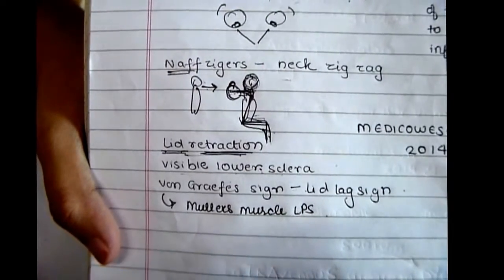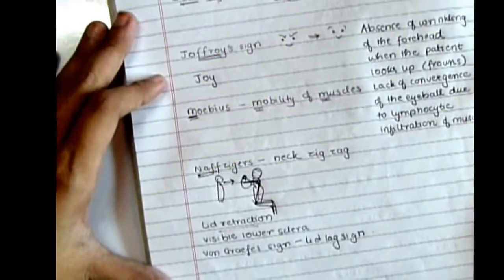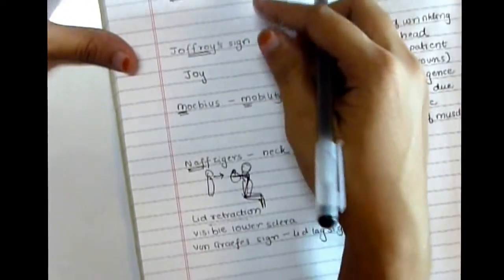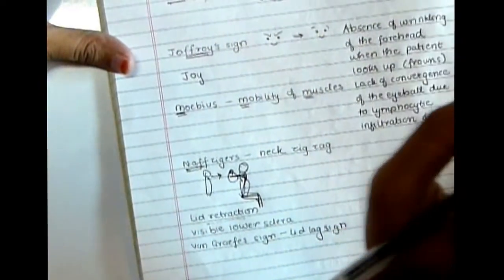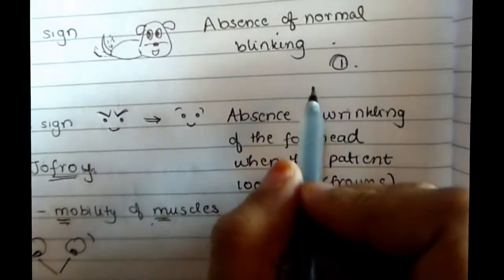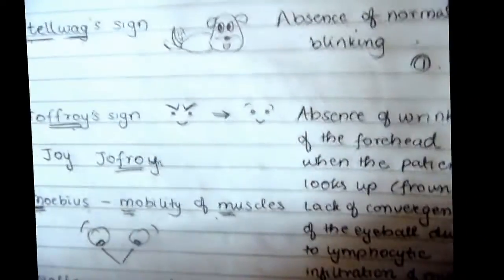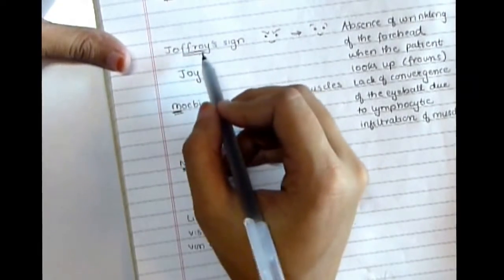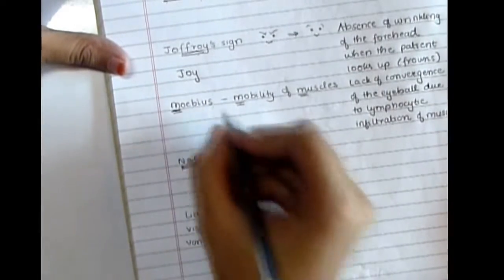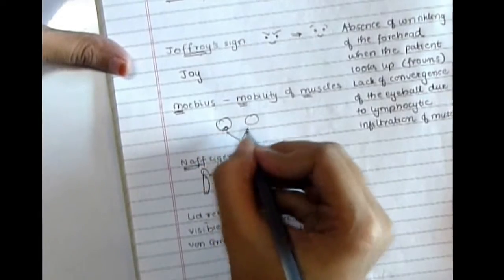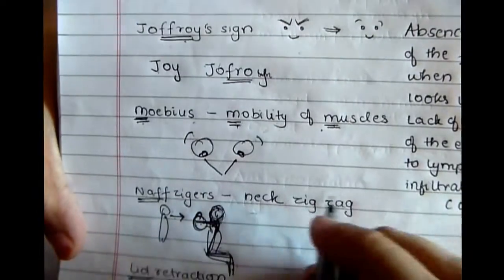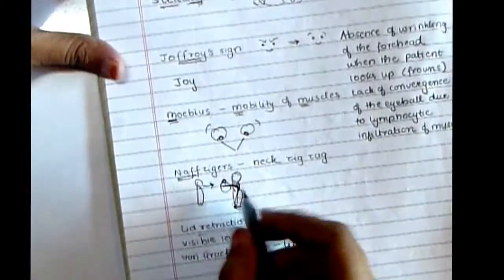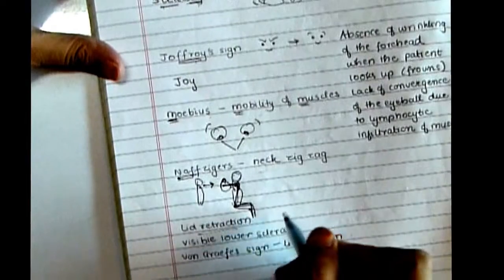Quick revision: the still-wag sign is absence of normal blinking giving a staring look, and it's the first sign to appear in mild cases. The Joffroy sign is absence of frowning on upward gaze. The Mobius sign involves absence of convergence of the eyeball due to muscle involvement — this typically causes diplopia and is actually the first sign of ophthalmoplegia, so it's very important to remember. The Naffziger sign is where protruding eyeballs are seen from behind with the neck extended.